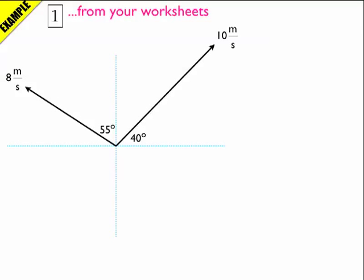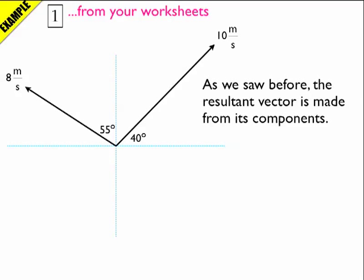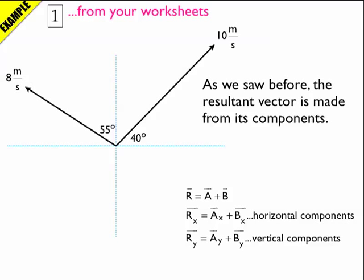So here's a problem. I've got two velocities: 10 meters per second going 40 degrees above the horizontal, and 8 meters per second going to the left 55 degrees from the vertical line. Now I need to add them up and find the answer. So I'm not going to draw the answer — I'm going to find the components and add the components together, just like we did before. I'll have to deconstruct each vector and then find the components.